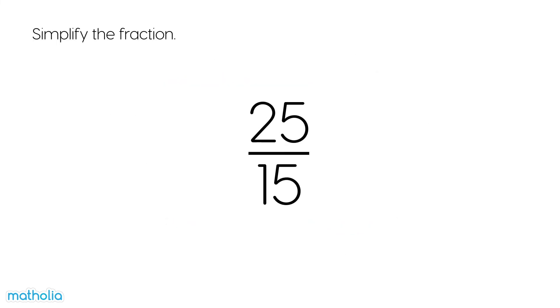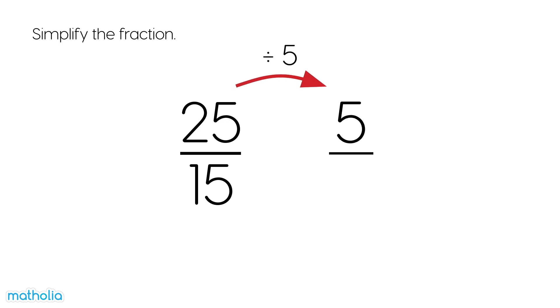Let's simplify 25 fifteenths. 25 and 15 can both be divided by 5. 5 thirds is in its simplest form. So, 25 fifteenths equals 5 thirds.